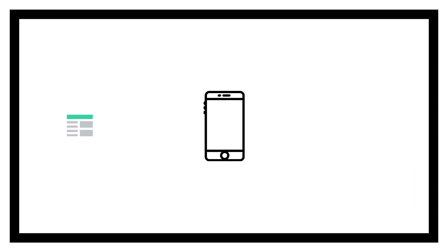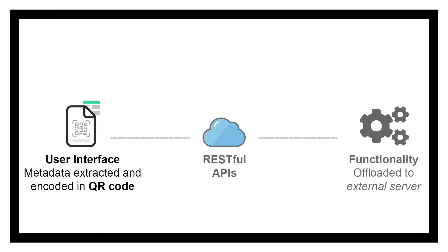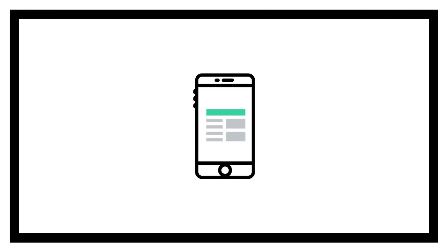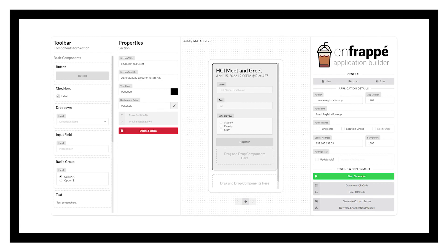Frappe achieves this by encoding the user interface metadata inside a QR code and offloading all functionalities to API calls. An end user can load Frappe apps by simply scanning the QR code, and the user interface is reconstructed ad hoc on the user's mobile device. We also designed an app builder tool, nFrappe, to allow developers to easily create Frappe apps.